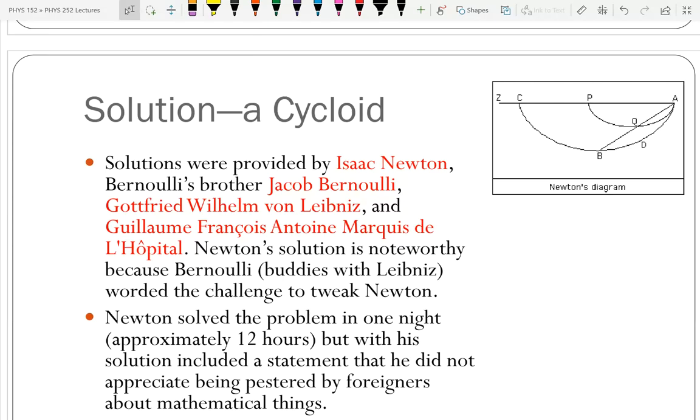We had two Bernoullis: Jacob and Johann Bernoulli. These were very gifted scientists and we have the Bernoulli relation. And of course there's Sir Isaac Newton, very famous.